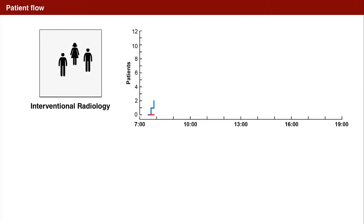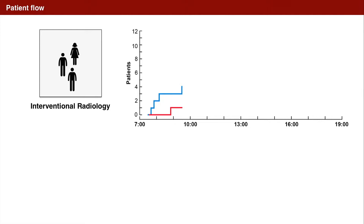Before the fourth person shows up, at 9:30 a.m., the first patient — the guy who came at 7:35 — comes out of the department. At 10 a.m., I ask you a test question: how many patients are in the unit? Sharp as you are, you will respond 3, because 4 went in and 1 came out.